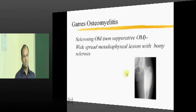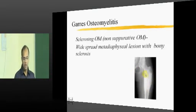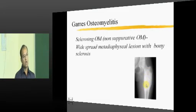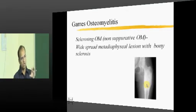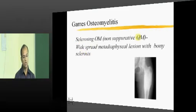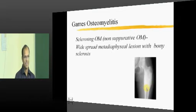Garre's osteomyelitis involves a low virulence organism where the body tries to contain it by forming exuberant bone. There is lot of osteoblastic activity and new bone formation due to irritation. It is also called sclerosing non-suppurative osteomyelitis - pus does not come out, but due to the inflammatory phenomena ongoing in the bone, there is lots of new bone formation making it look more sclerotic. It is usually seen at the metaphyseal-diaphyseal junctions and is very difficult to treat.